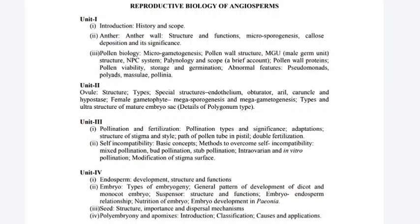Next: types of embryo sac — every embryo sac definition. Next: structure of ovule. Next: what is pollination. Next: sarcino-tropous ovule. Next: differentiate between self and cross pollination. Next: self-sterility.